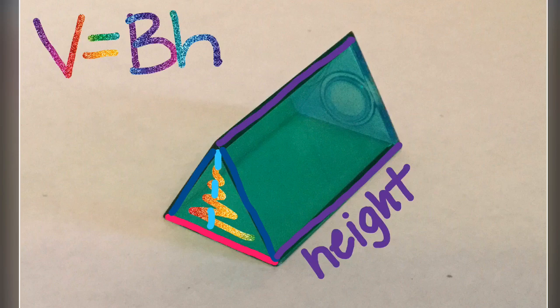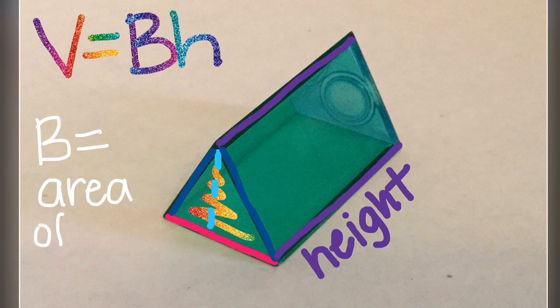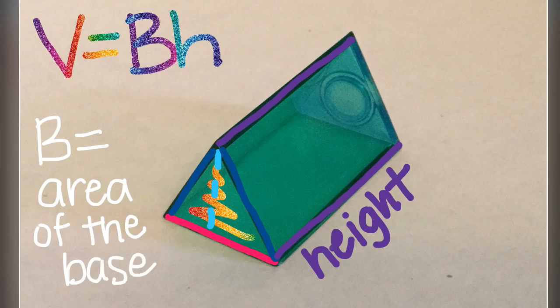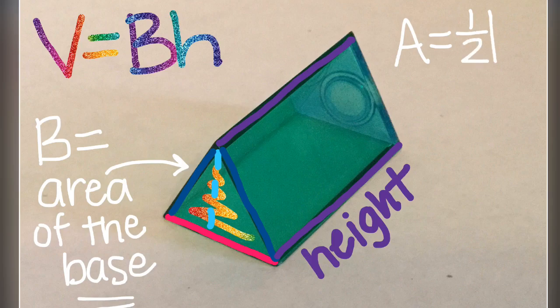So, we take big B times H, meaning we have to find big B. Again, as a review, capital B is the area of the base shape. Here, the base shape is a triangle. So, therefore, we need to use the area formula for a triangle. Area formula is, for a triangle, 1 half BH, the base of the triangle times the height of the triangle.